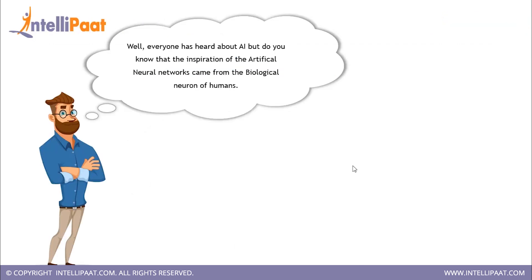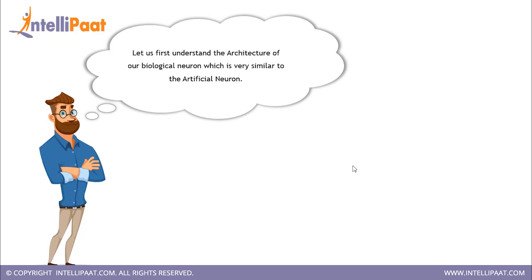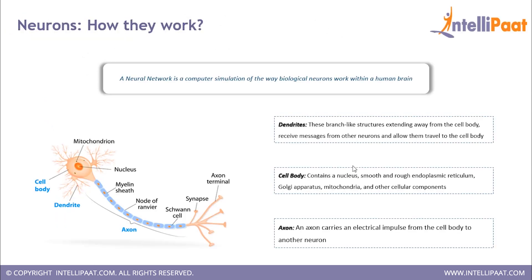The first question to pop into your head would be: what is the inspiration behind these artificial neural networks? Well, the answer is the biological neural network of our brain. Let us first understand the architecture of a biological neuron. As you can see in the slide, our biological neuron has three main components: the dendrite, the cell body, and the axon.